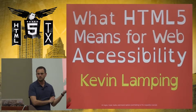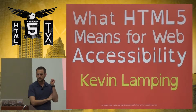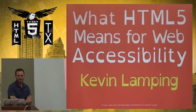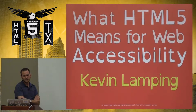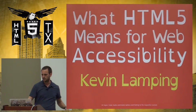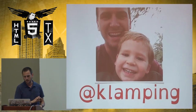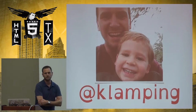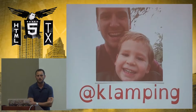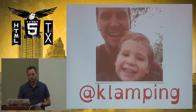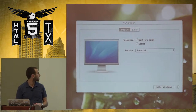So if I get anything wrong in here, see me out back and we'll discuss it. My name's Kevin Lamping. I go by K Lamping on Twitter. I'm a front-end web developer. I'm a native Texan as well — I think that's more important.